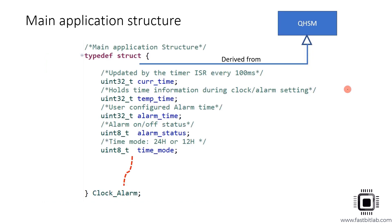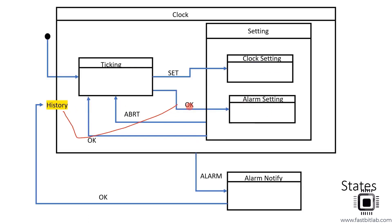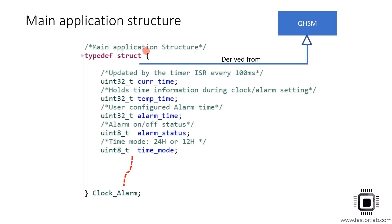We have to create one main application structure for which we are drawing the state machine. This main application structure is derived from QHSM because this is a hierarchical state machine. Let's introduce a couple of attributes: the current time attribute, which holds the real time and is updated by the timer ISR every 100 milliseconds. The state machine never updates this variable — only the timer ISR does.